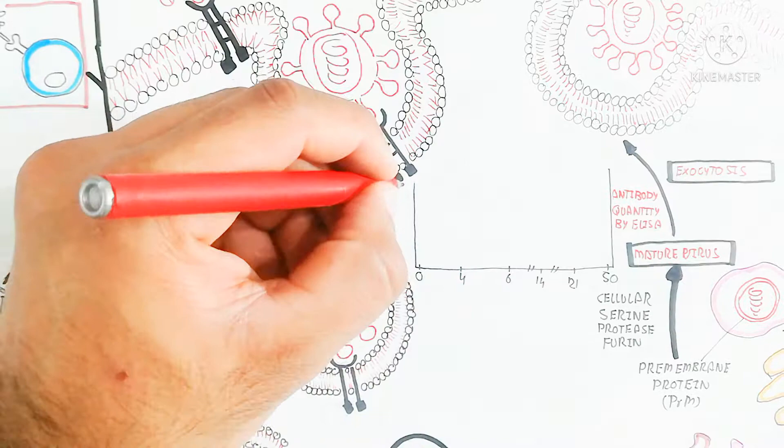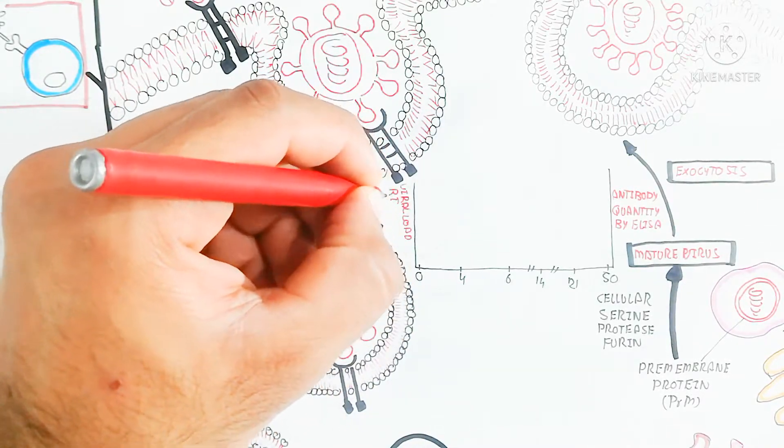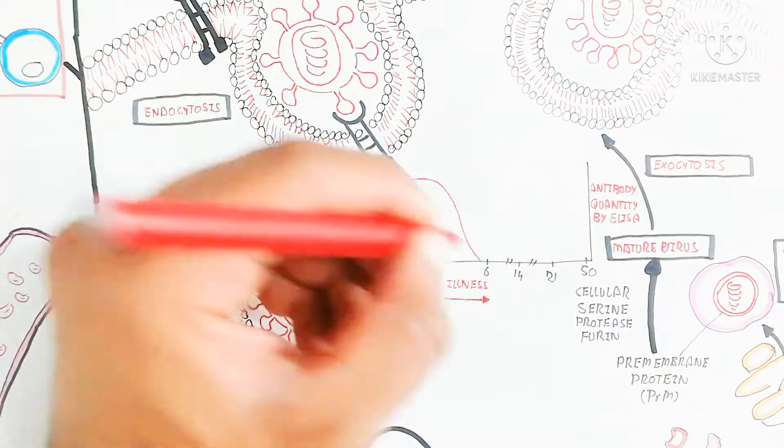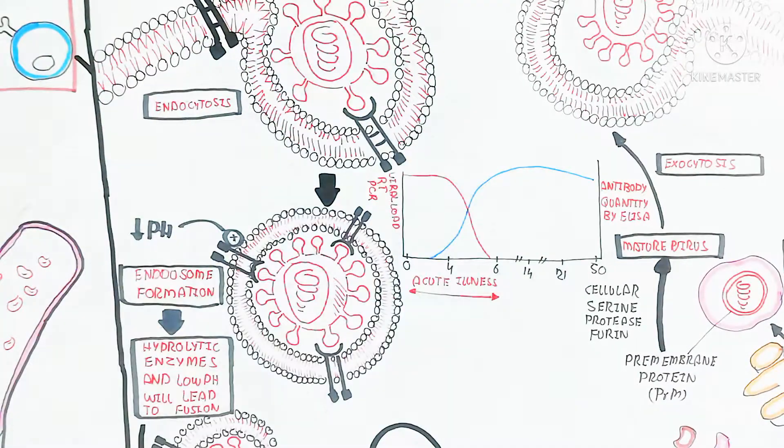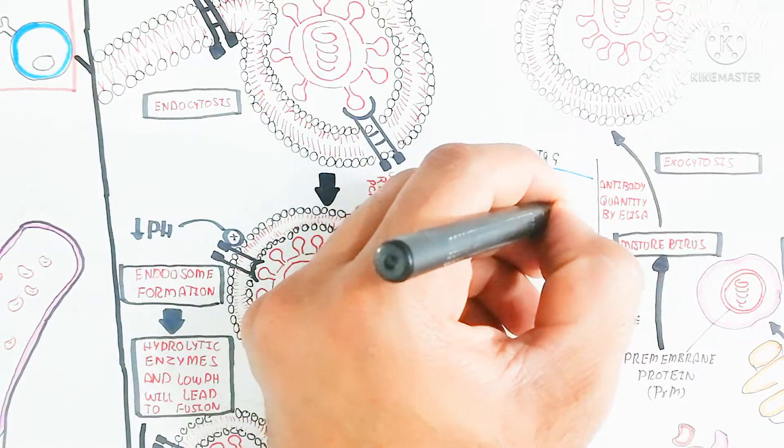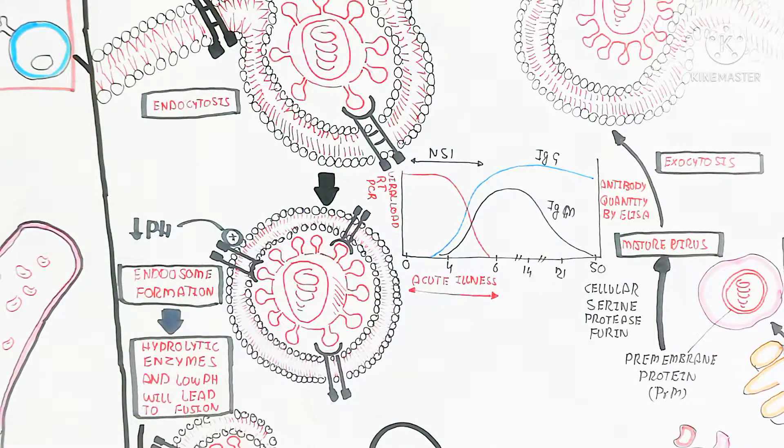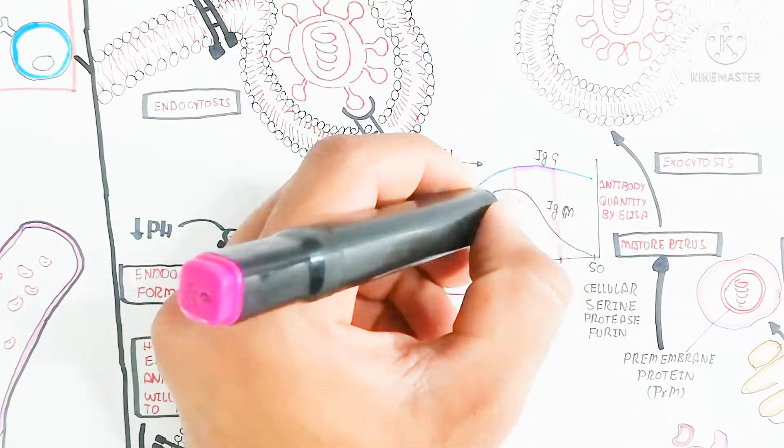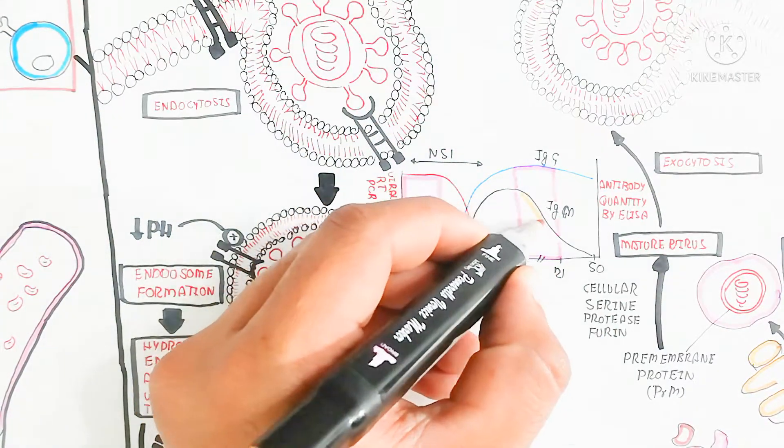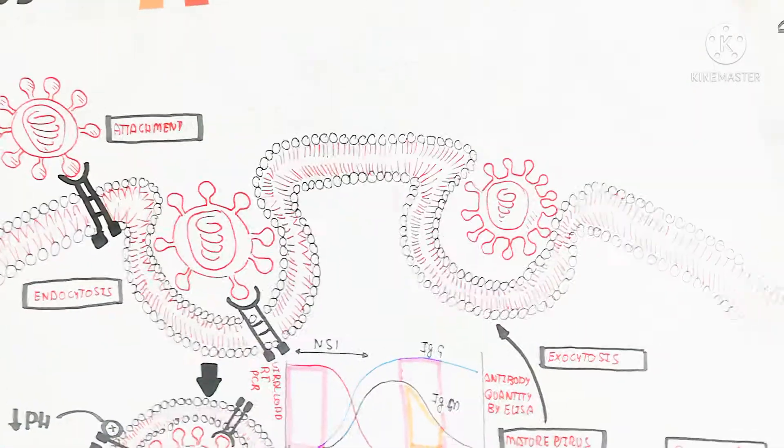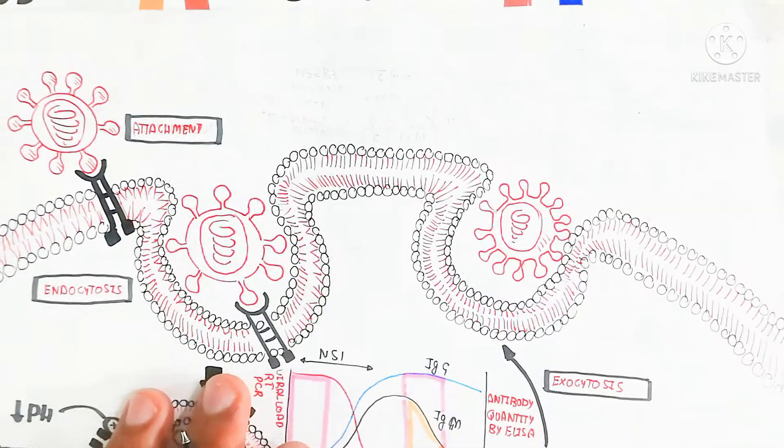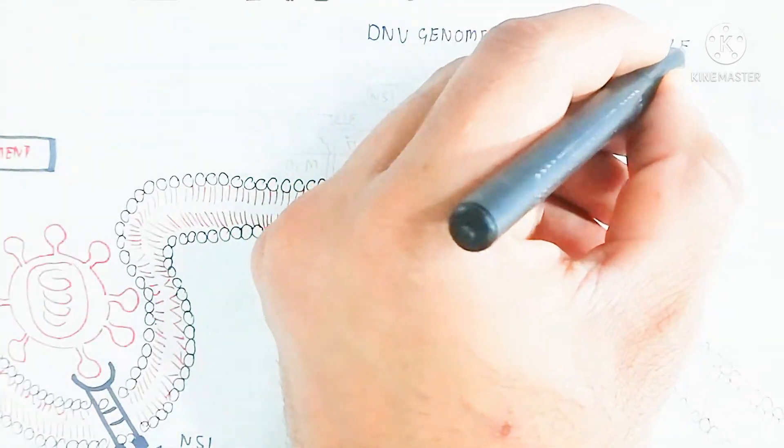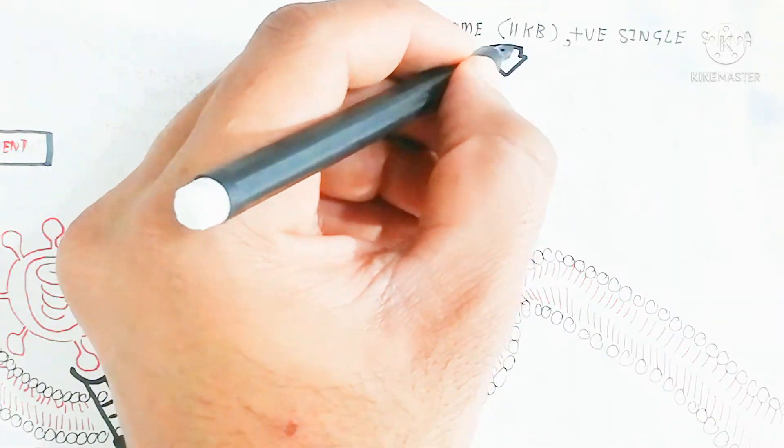The horizontal axis shows acute illness, and the vertical axis shows viral load. Real-time PCR can show the process. The production of antibody occurs with the passage of time. After 50 days, there is high acute illness due to the high number of NS1 RNA. The immunoglobulin has two types: IgG and IgM, which are produced after infection. Antibody quantity can be identified by ELISA test.